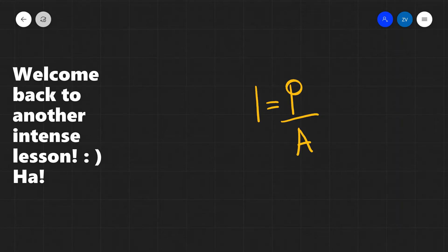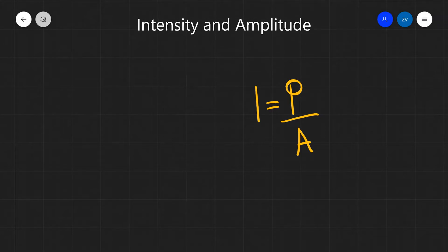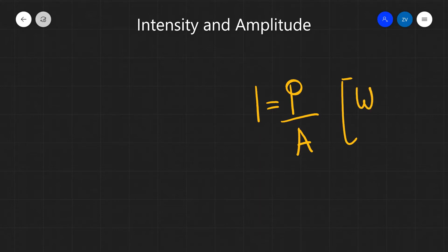Hello everyone, welcome back to Z-Physics. Today we are going to be looking at intensity and its dependence on the amplitude. So far we've studied that intensity is equal to the amount of power divided by cross-sectional area. The units of intensity are watts per meter squared, because power is measured in watts and area is measured in meters squared.